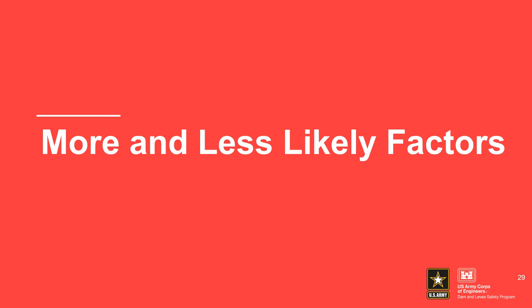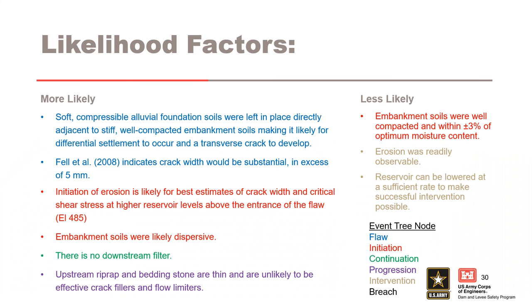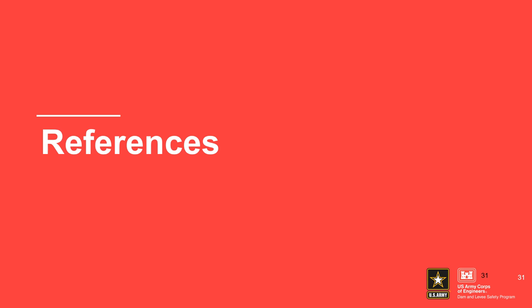Now that we've stepped through each node in the event tree, let's take a look at the summary of more and less likely factors for the concentrated leak erosion potential failure mode. It's often helpful to think of more and less likely factors by nodes in the event tree, which is why you see the different colors on the slide. Here are some examples of more and less likely factors for a concentrated leak erosion failure mode.